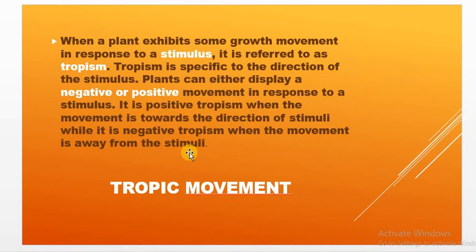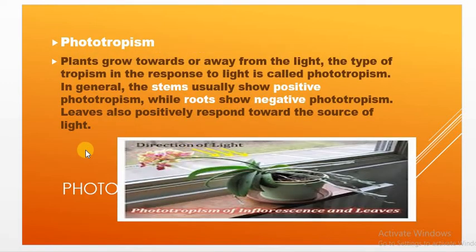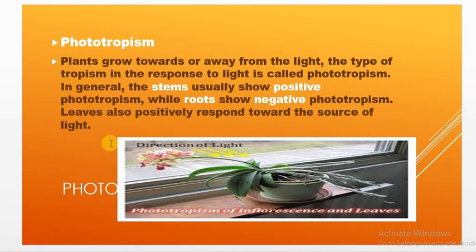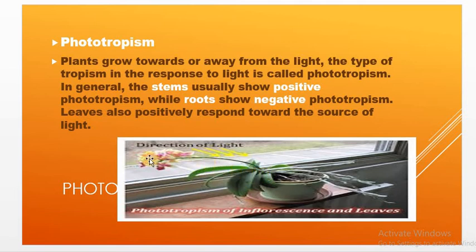The first type is phototropism. When plants grow towards or away from light — photo means light — this is called phototropism. Stems usually show positive phototropism, moving towards the light. Roots show negative phototropism, moving away from the light. Leaves also positively respond towards the source of light. A plant kept near a window bends towards the light — that is an example of phototropic movement.